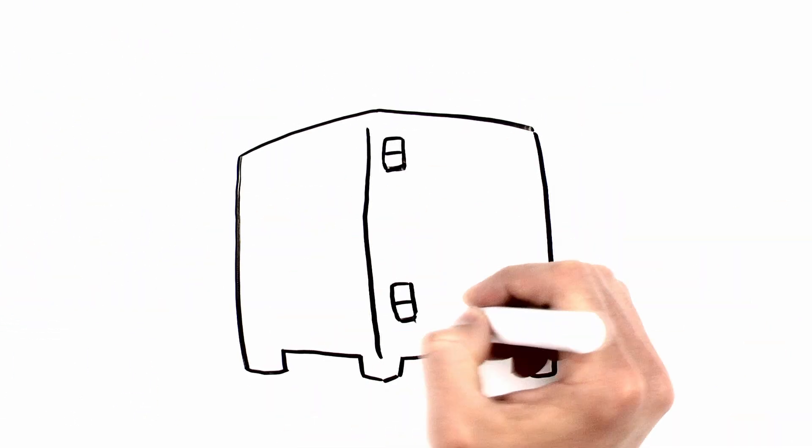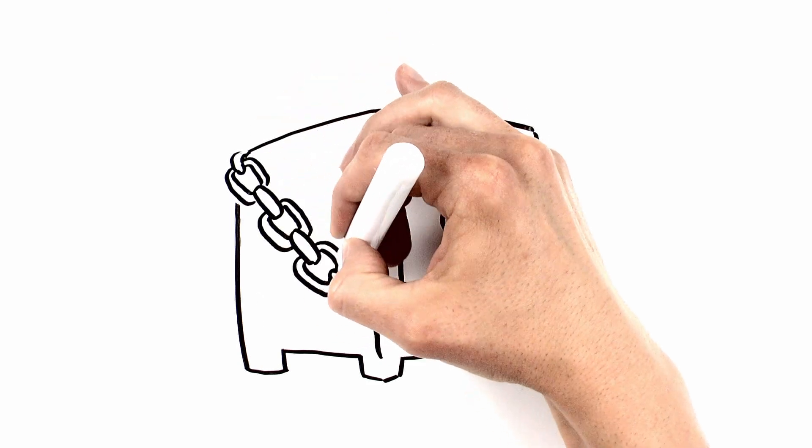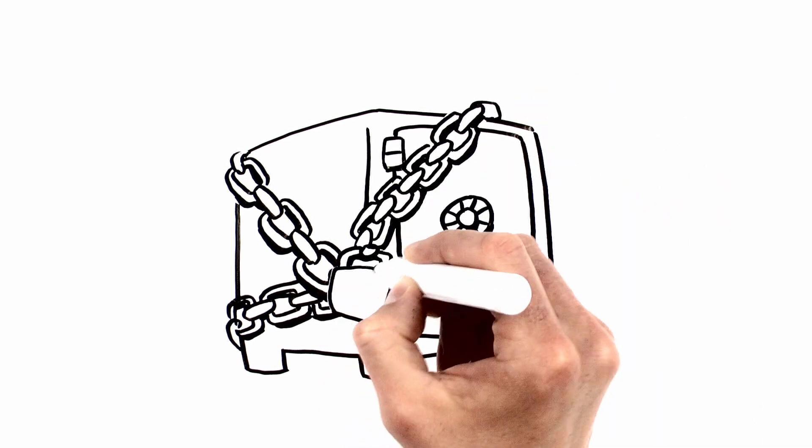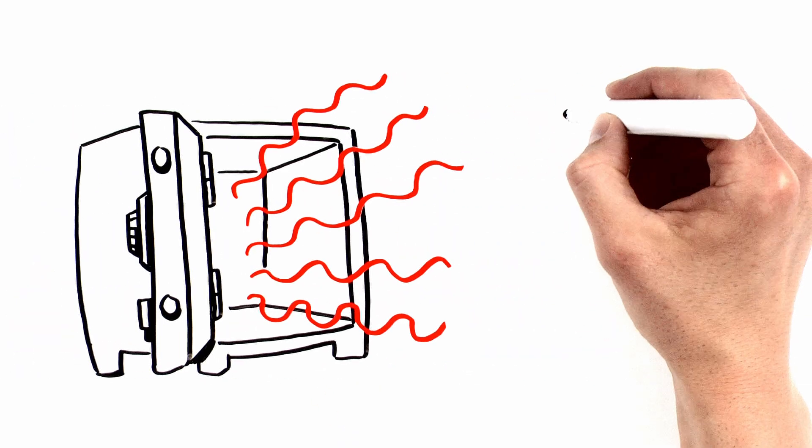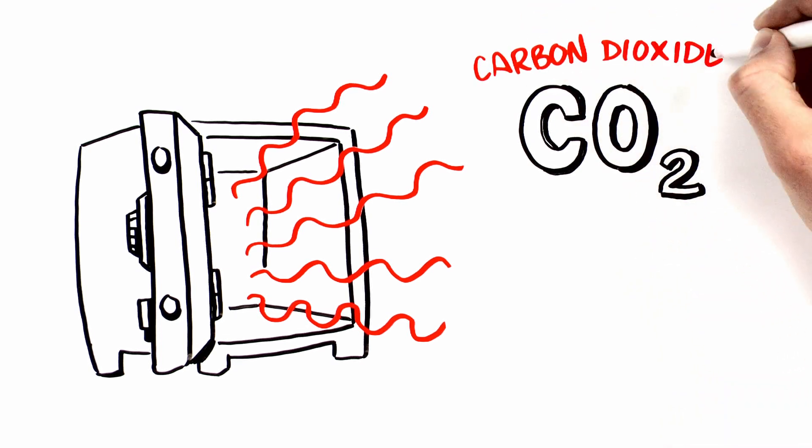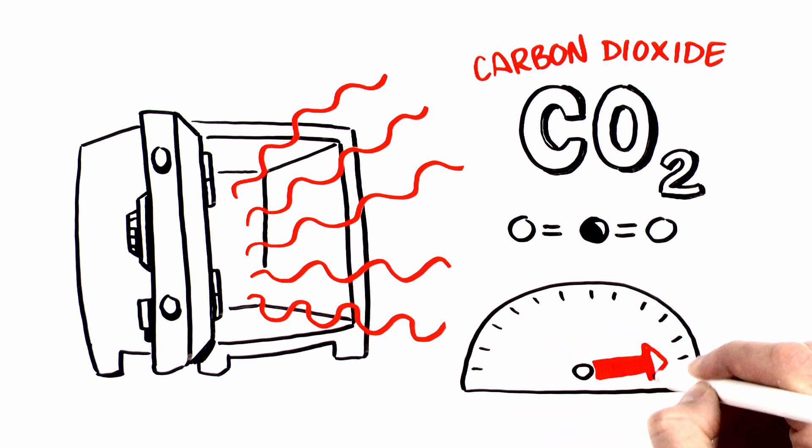Those fossil fuels - coal, oil, natural gas - contain carbon that's been locked away from the natural cycle for eons. But when we burn them, that carbon joins with oxygen to make carbon dioxide that goes into the atmosphere. It throws the natural balance out of whack.